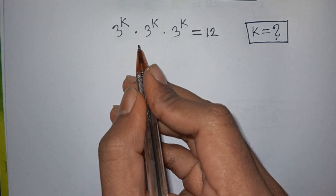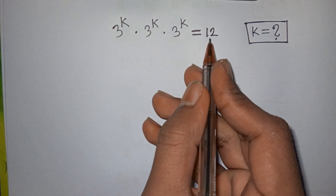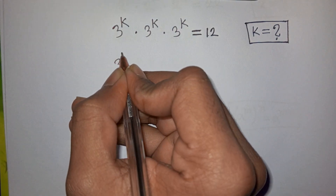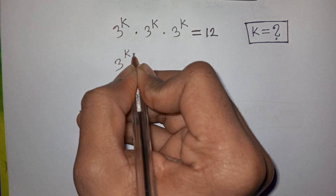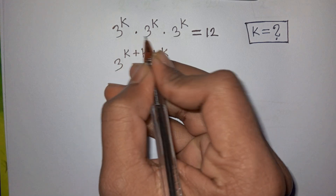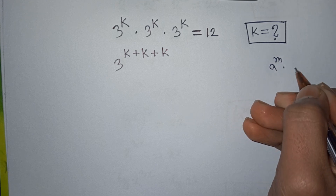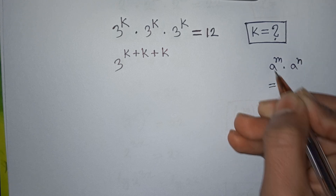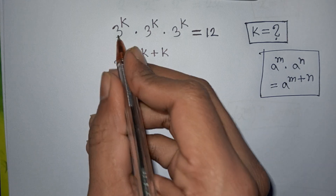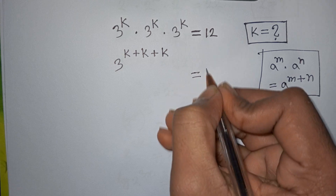Today I will solve this algebra problem: 3^k times 3^k times 3^k is equal to 12. What is the value of k? We compare with the exponential rule that a^m times a^n is equal to a^(m+n), so 3^k times 3^k times 3^k becomes 3^(k+k+k), which equals 12.